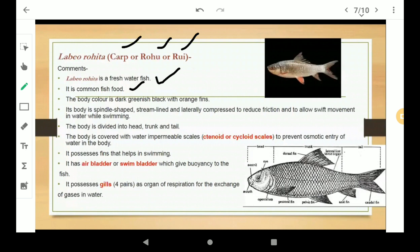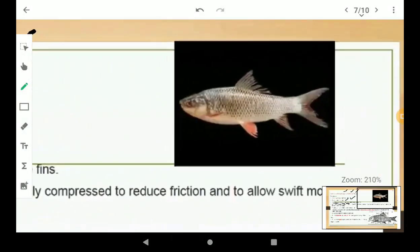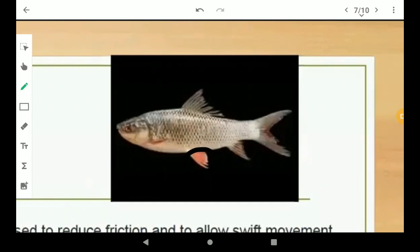It is a common fish food. The body color is dark greenish black with orange fins, and here in this picture you can observe the orange fins and dark grayish greenish black color.